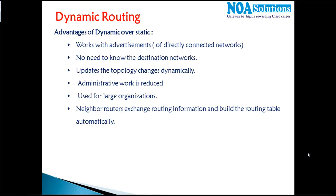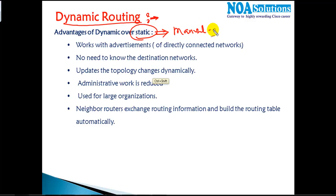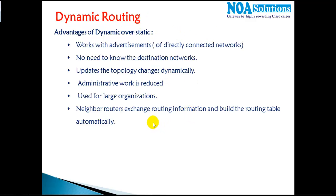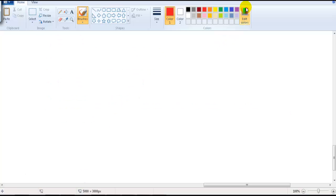In this section we are getting into dynamic routing protocols. Before that, let's understand the major advantages and benefits we get over static routing. With static routing, you have to manually configure the route for each and every destination. With dynamic routing, we don't need to manually add routes — that's one of the major benefits. Let's understand why dynamic routing is most commonly used and more preferred, with some basic examples.